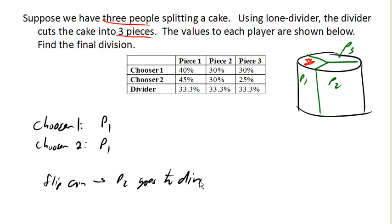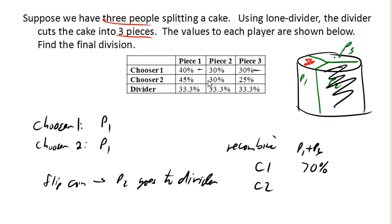So now what's gonna happen is we're going to take piece one and piece three, reassemble them, so we're gonna shove those two pieces of the cake back together. Remember, piece two's gone now. And so we're gonna recombine our cake. And so piece one and piece three are gonna get combined. For chooser one, those two pieces are gonna have a combined value of 70% of the whole. For our second chooser, they're gonna have a combined value of 70% of the whole.